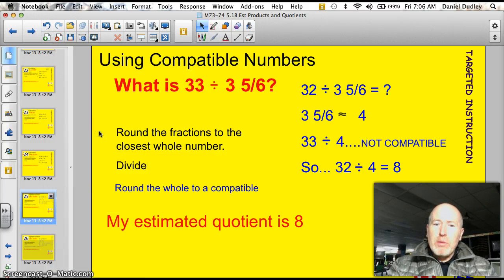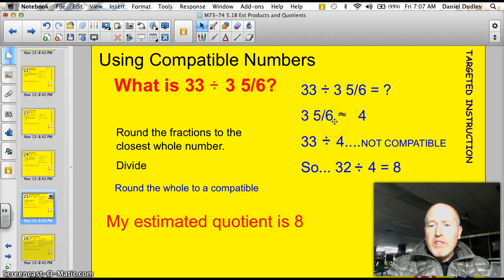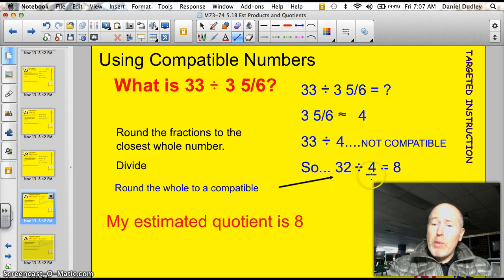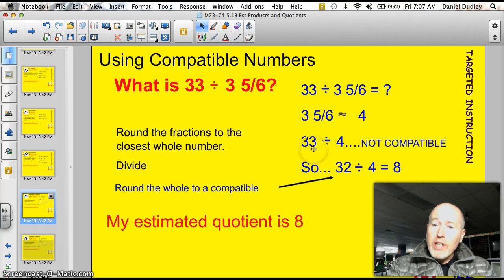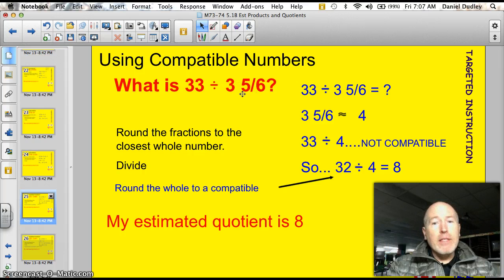Sometimes, we need to use compatible numbers. I'll show you as we work through this example. 33 divided by 3 and 5 sixths. So, I write out my numbers. 3 and 5 sixths. Well, that's about 4. So, I've got 33 divided by 4. Those numbers are not compatible. They don't work well together, do they? So, I need you to come down here and round to a compatible number. 32 is divisible by 4, and it's very close to 33. So, I just rounded down 33 to 32, and I said 32 divided by 4 is 8. My estimated quotient is 8. Let me go up and double check. 33, that's about 32 divided by about 4, and that's how you do it.